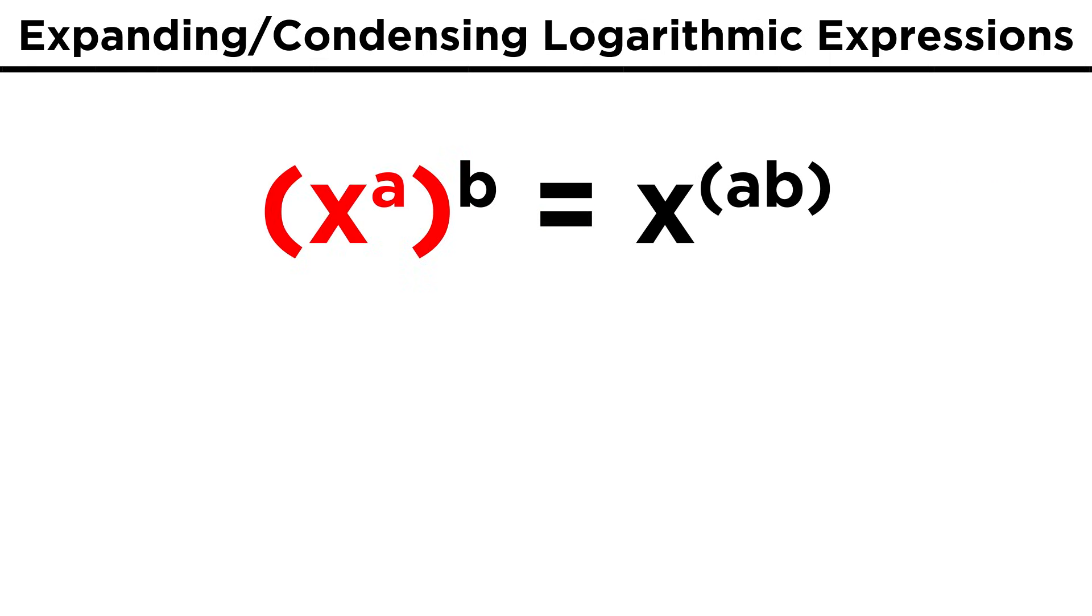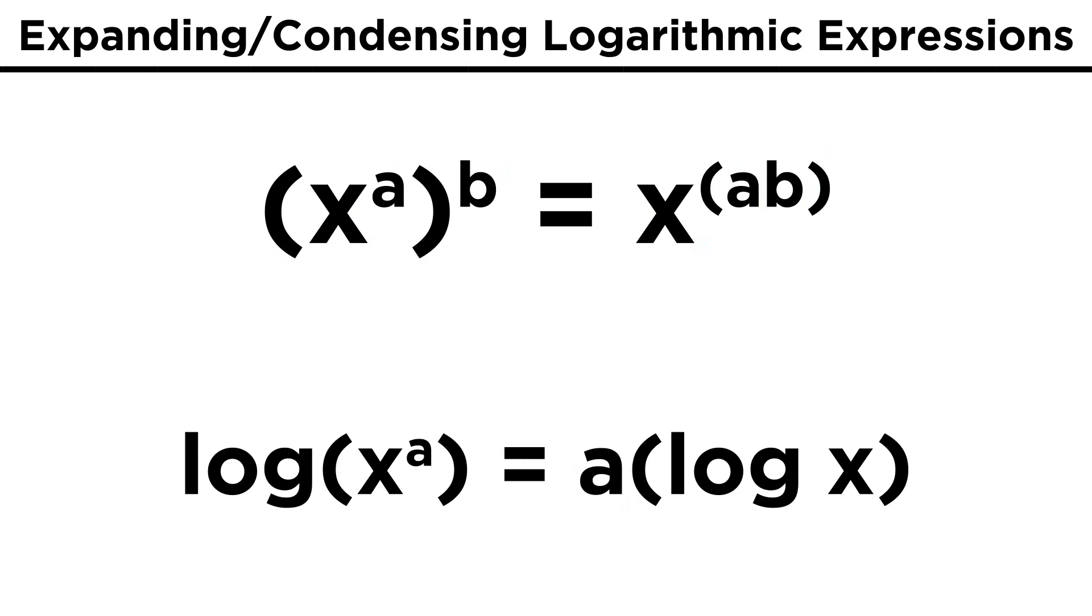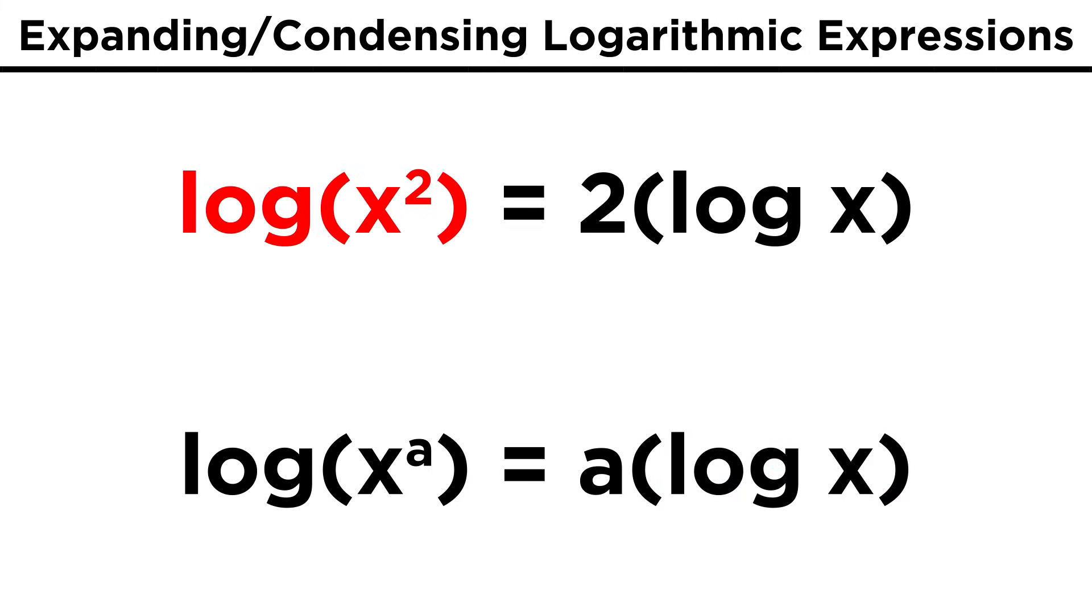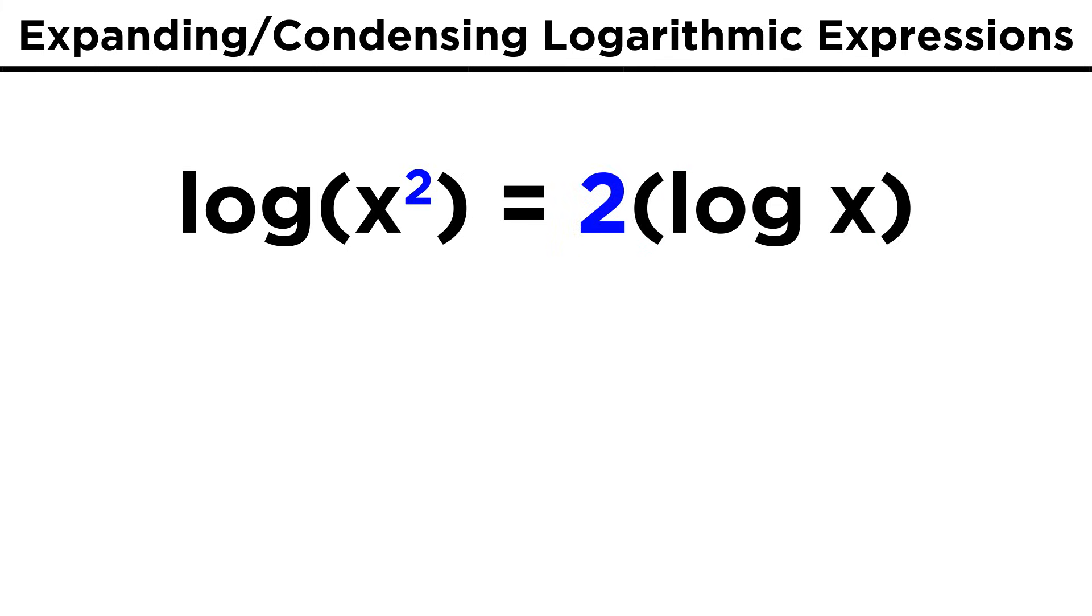Next, we can remember that X to the A to the B equals X to the A times B. The corresponding property for logs tells us that log of X to the A equals A log X, so if we have log X squared, that is the same as two log X. Let's quickly mention that this only applies if the exponent is part of the term that the logarithm is operating on.